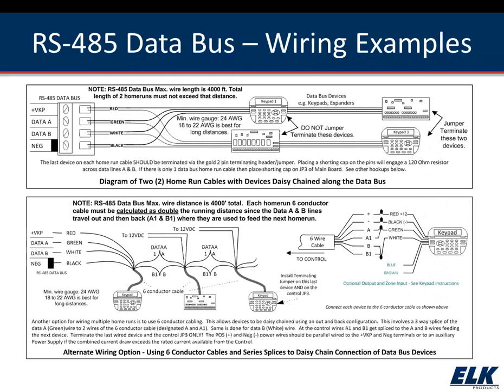Looking at the daisy chain diagram, we've got four-conductor wire with four devices showing exactly how to wire in. I view it as going into something and coming back out and going to the next device. On the last device on both home runs, we put a terminating jumper. A lot of people are getting away from four-conductor wire and using CAT5 or CAT6, which has come down in price and makes for a cleaner installation. The last device on each home run must have the terminating jumper.